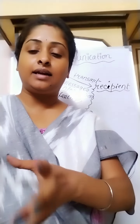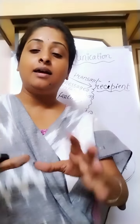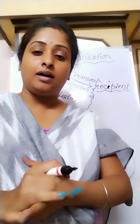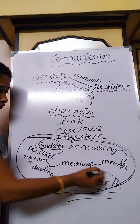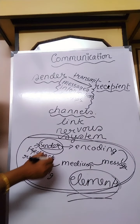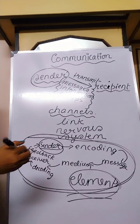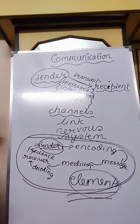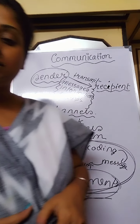There must be a sender at the beginning — at the primary stage — then other elements come after that: message, decoding, encoding. The first and foremost important thing in this circular movement is the sender. In my next class, I will discuss all the elements lying in the process of communication. Till then, goodbye.